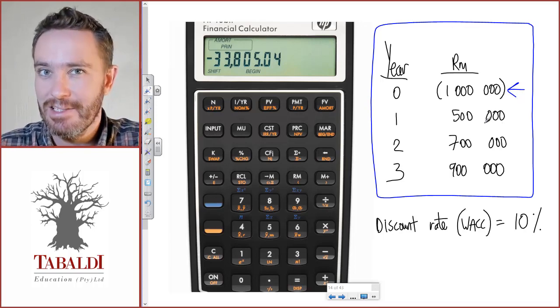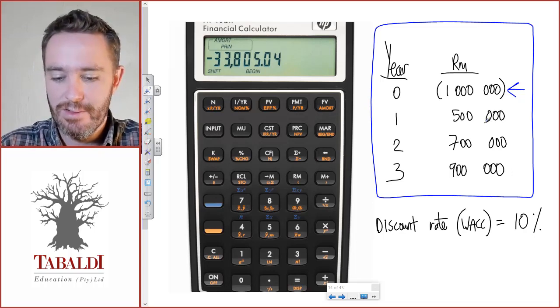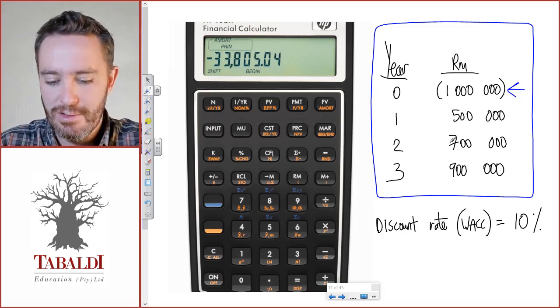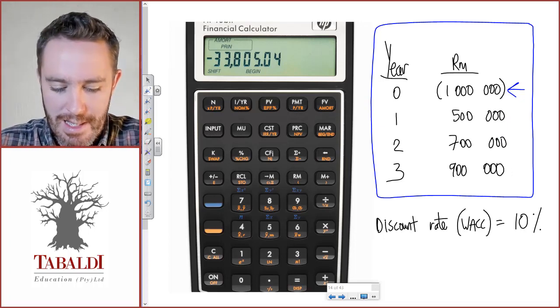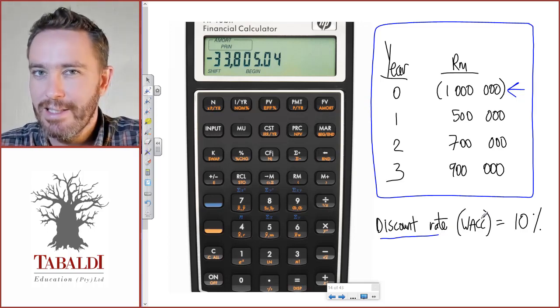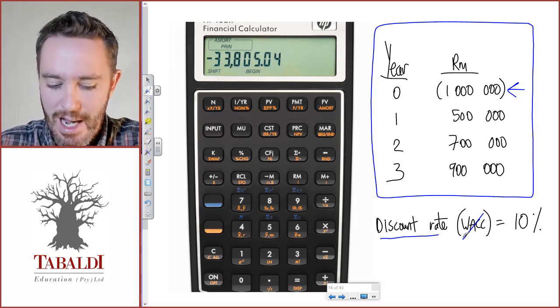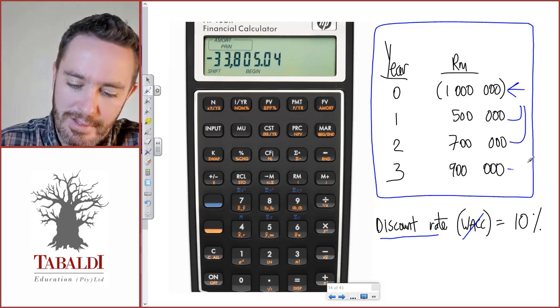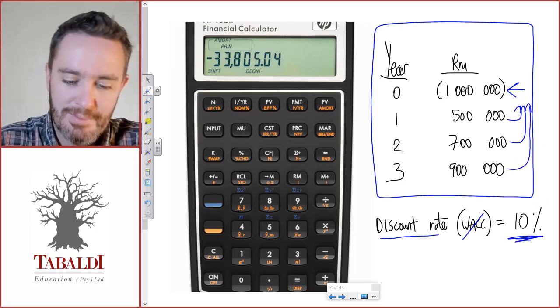We will earn net cash flows—net means our cash inflows less cash outflows—of 500,000 in year one, 700,000 in year two, and 900,000 in the last year. Our discount rate, which you'll later see is our weighted average cost of capital, is 10%. We will discount the future cash flows at 10%, subtract the initial cash flow, and get our net present value.